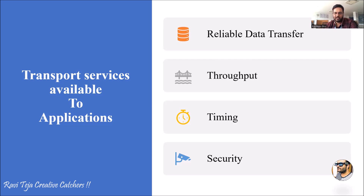There are mostly four important services which are considered as the transport services to the application layer. The first one is reliable data transfer, the second one is throughput, the third one is timing, and the fourth one is security. We are going to have a brief discussion about all these four points.